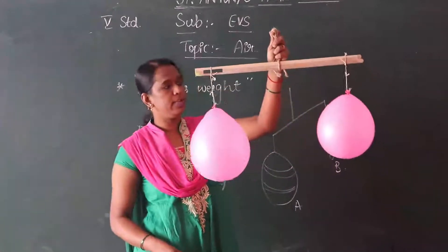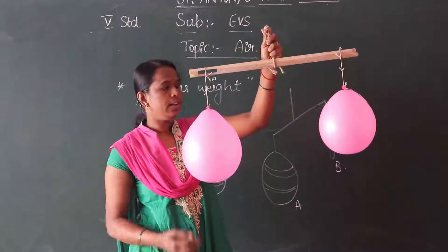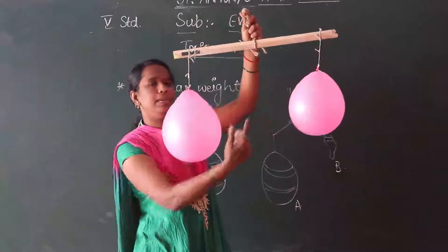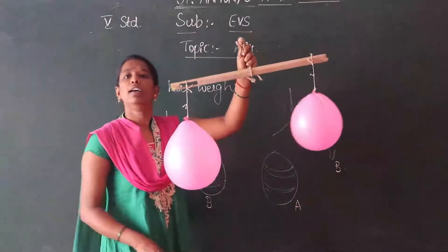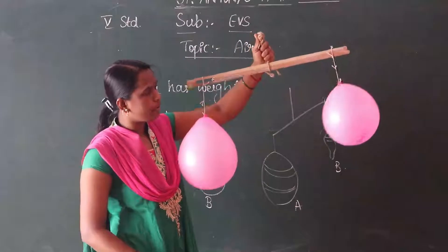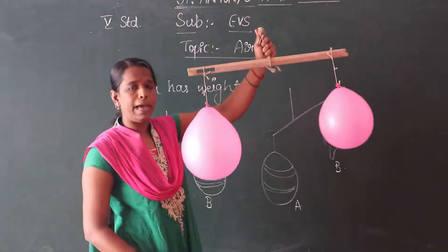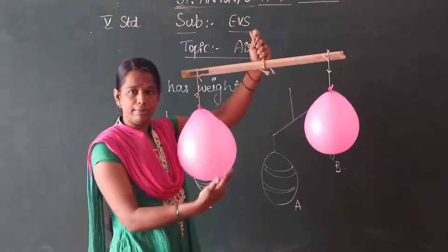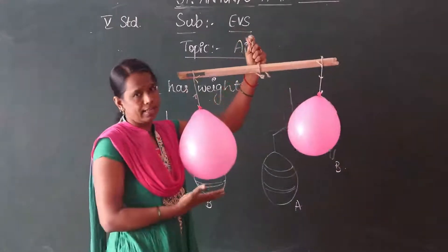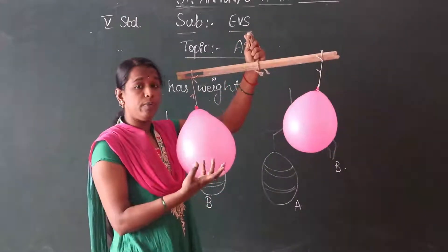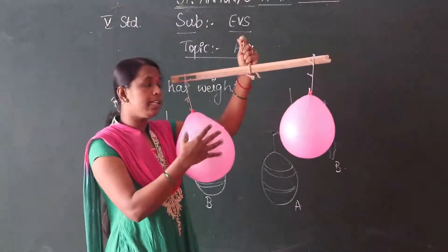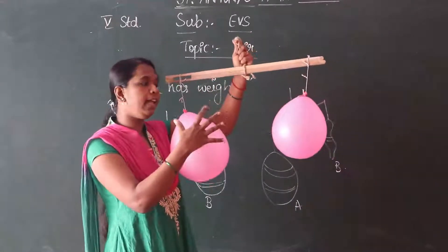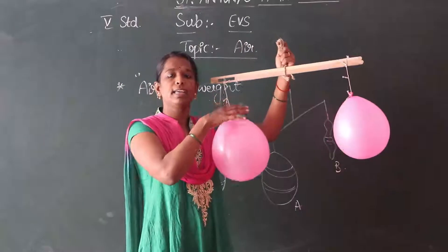Observe carefully, children. We call one balloon A and the other balloon B, as shown in the figure. So what happens? The two balloons are balanced, meaning both the balloons have the same weight. That is why the balloons are balanced. When we blow air into both the balloons, the air takes some weight — it has some weight.